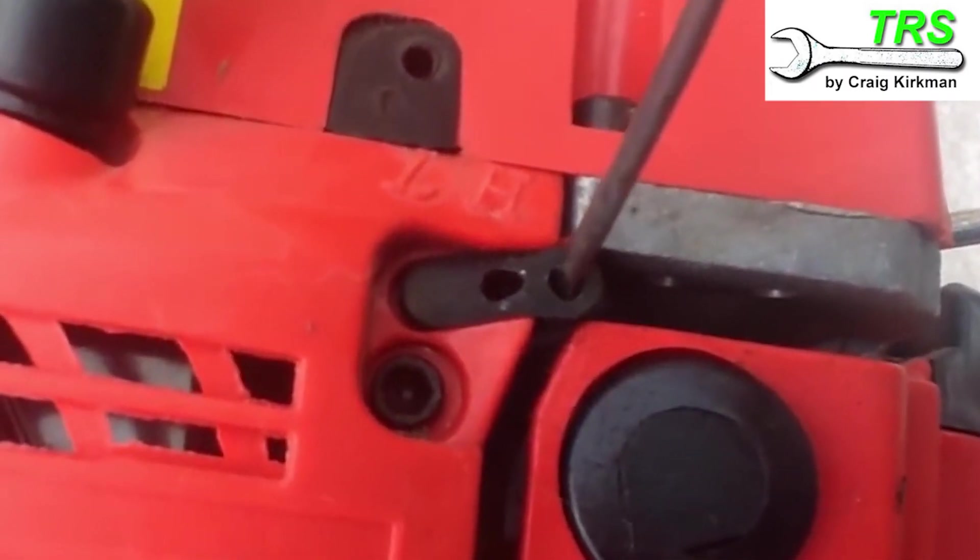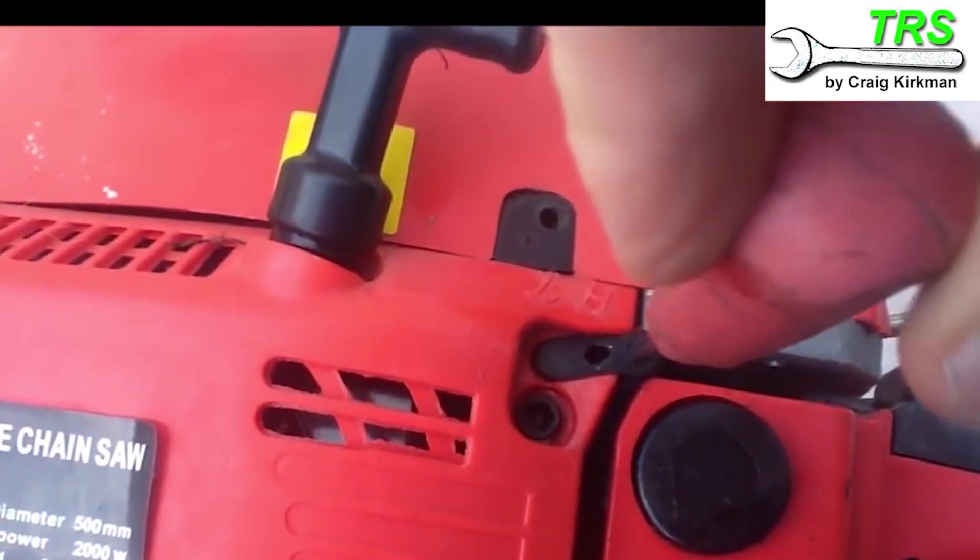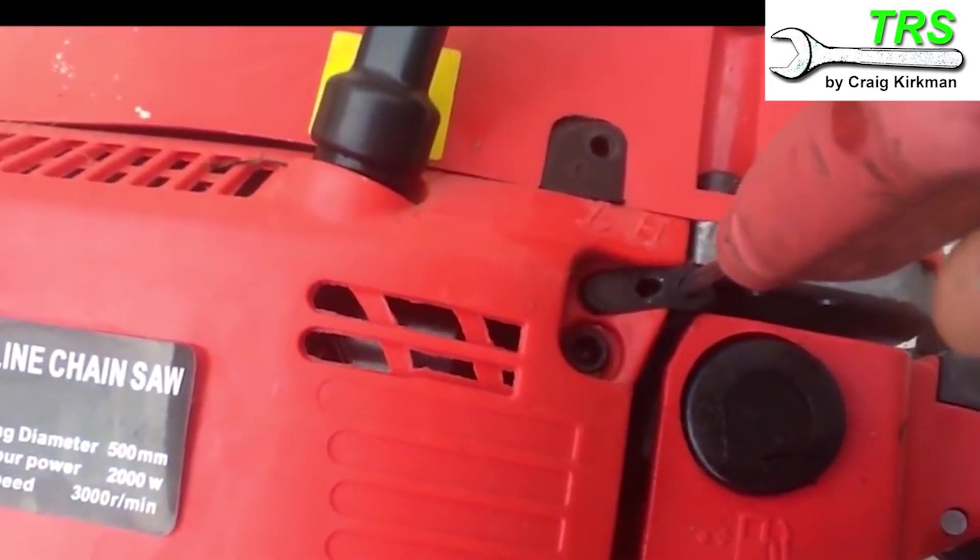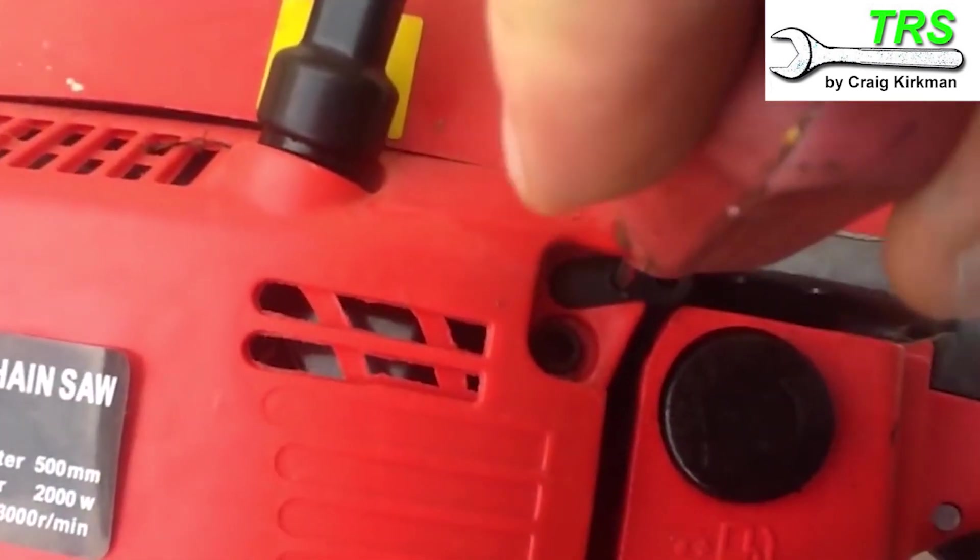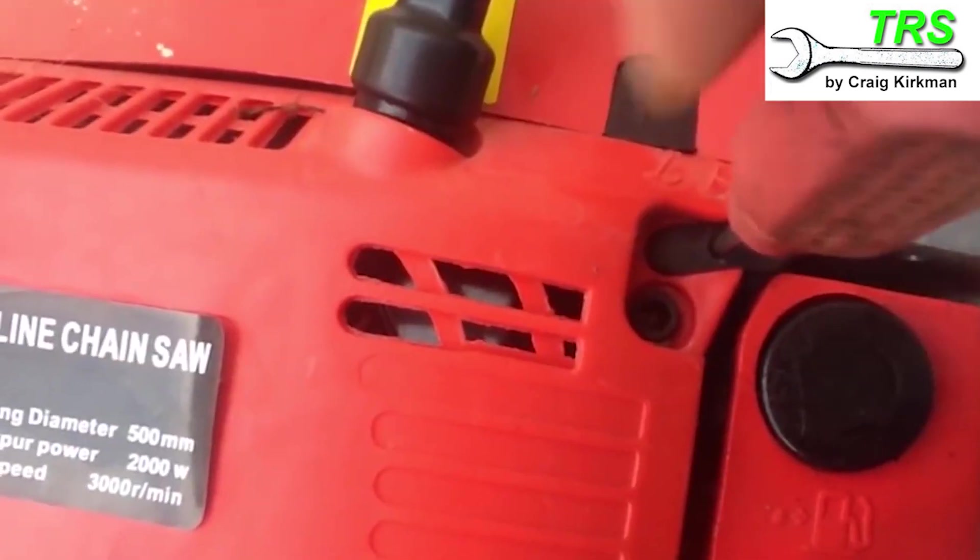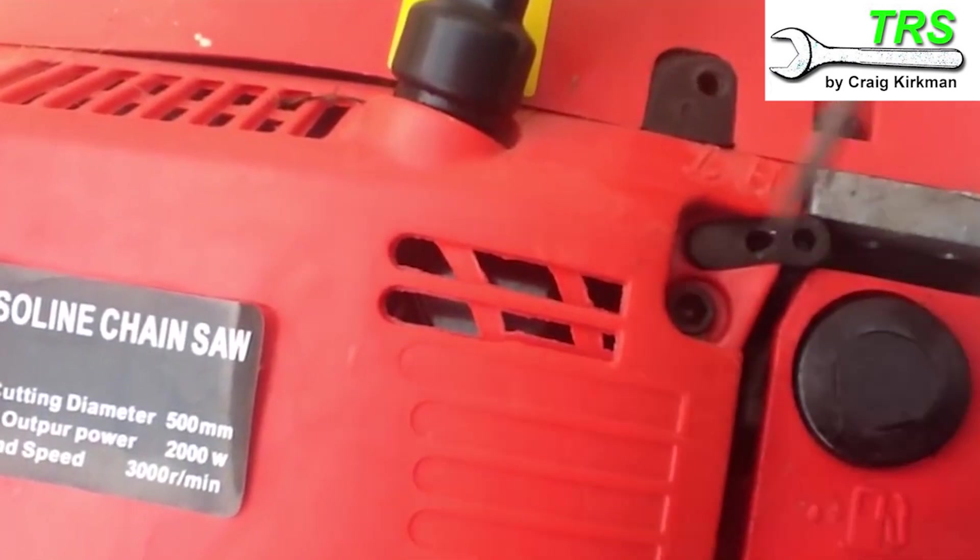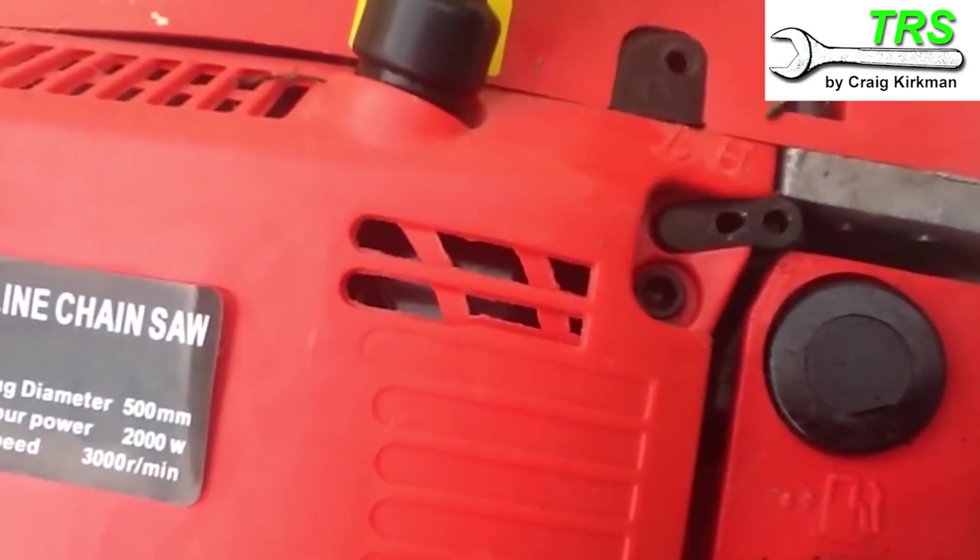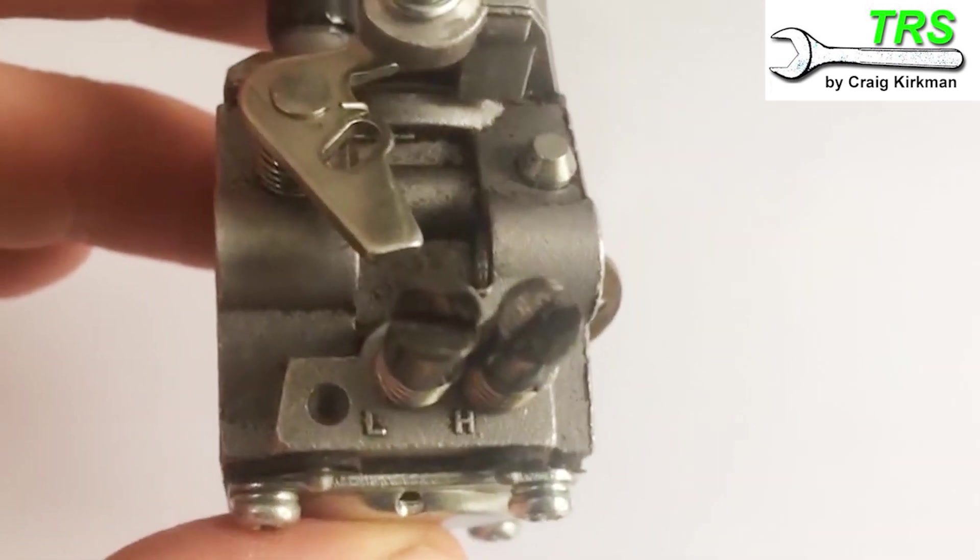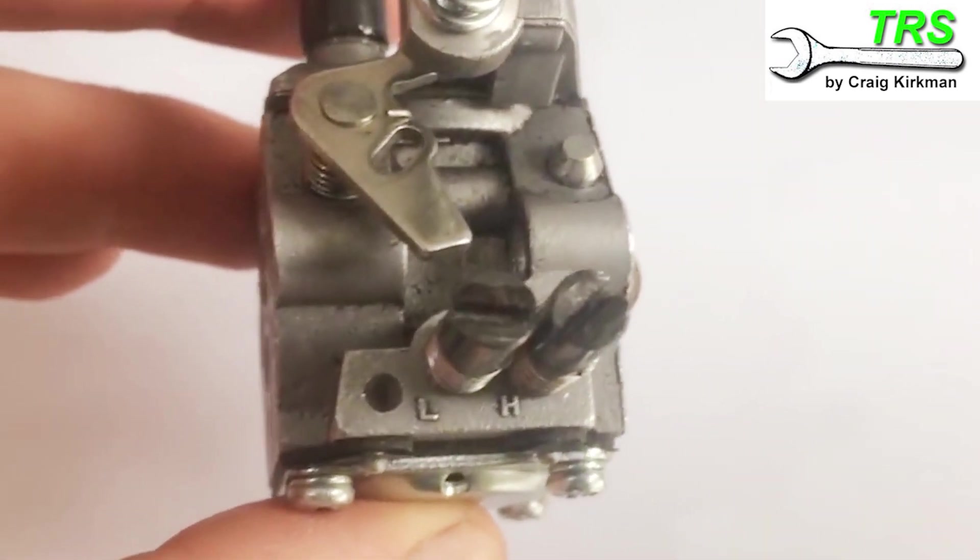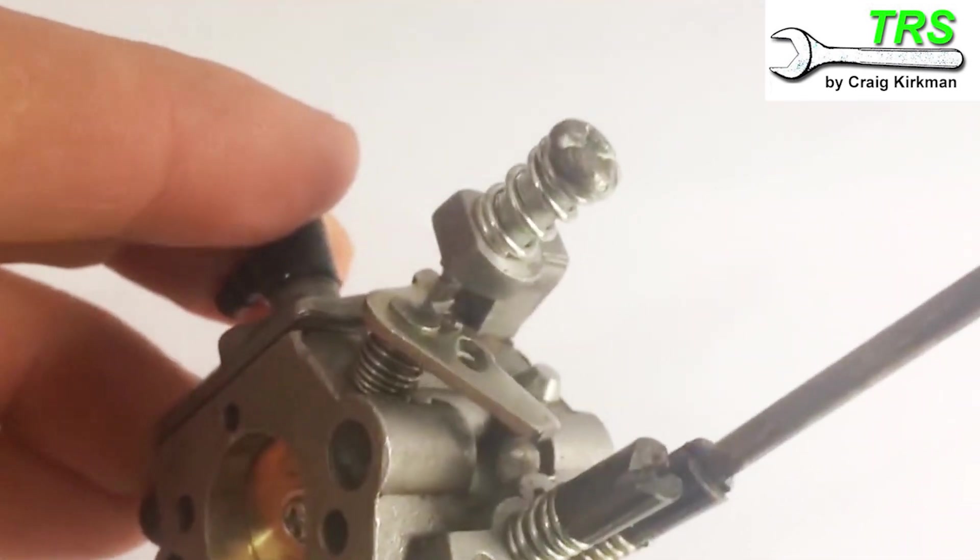First of all, I'll put the screwdriver into the hole labeled H. Of course, the engine's not yet running. I'll turn this in clockwise until it stops and I won't force it when it does stop. Then I'll do exactly the same for the low screw. Basically, we're looking to screw both screws fully in.